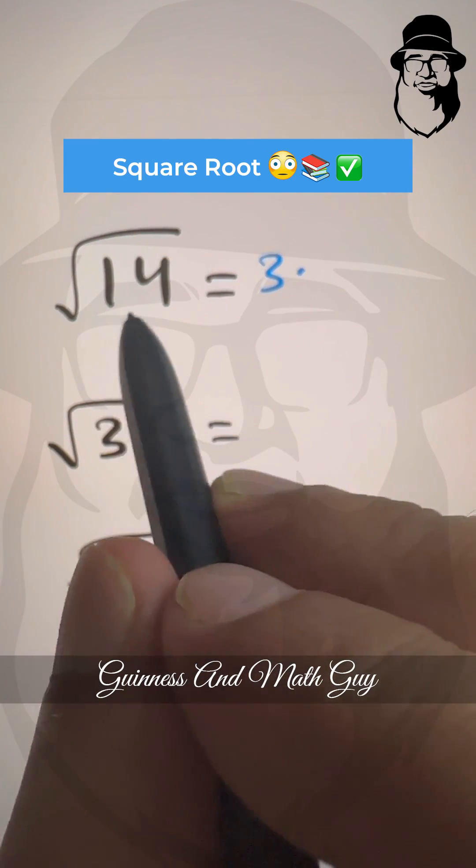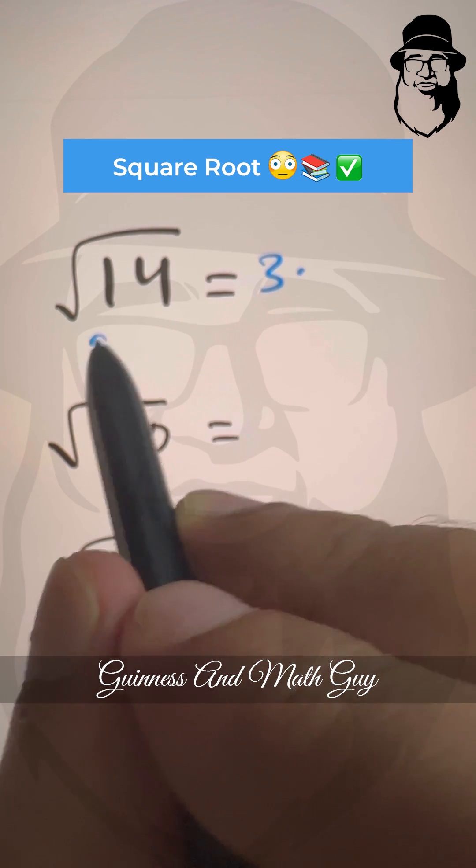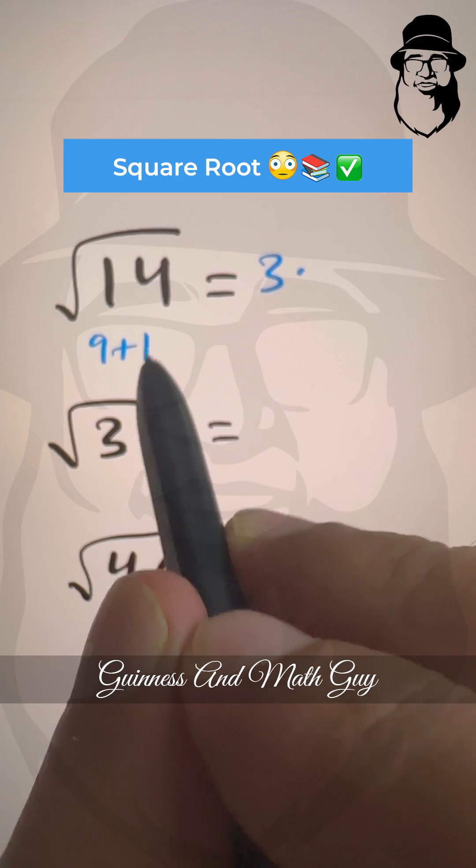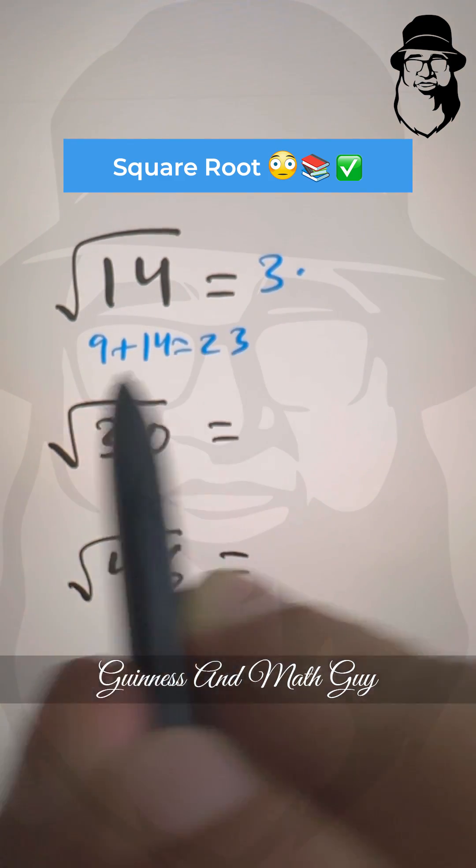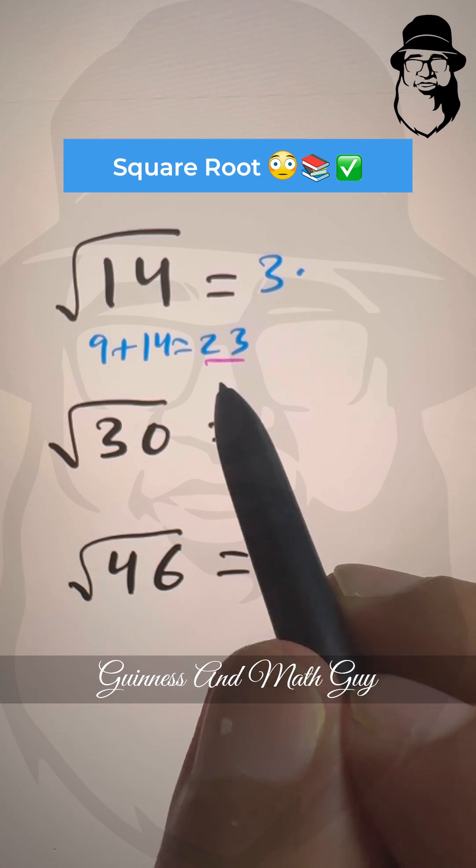And we know that the largest perfect square below 14 is 9. So 9 plus this 14 is 23. And we always divide it by double of this number 3, that is 6.